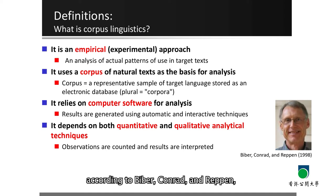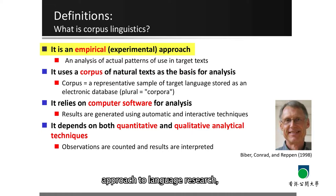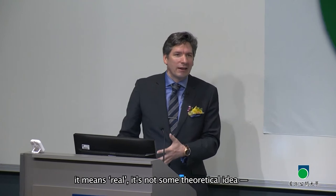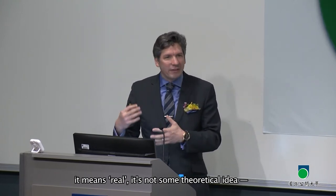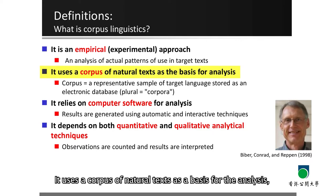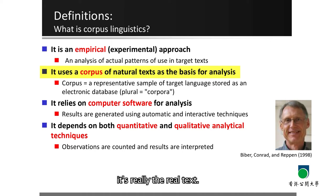Corpus linguistics, according to Biber, Conrad, and Reppen — three very well-known scholars in the field who wrote a great book about corpus linguistics — is an empirical, which means an experimental approach to language research, an analysis of actual patterns of use in target texts. And the word actual is important here — it means real. It's not some theoretical idea; it's actually happening in the real world. It uses a corpus of natural texts as a basis for the analysis, and this natural hints at this realness.